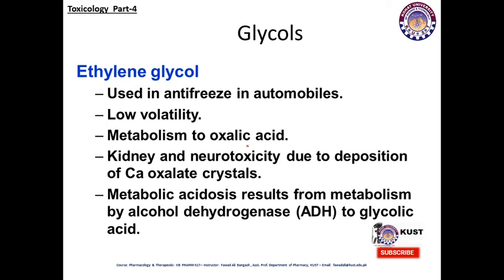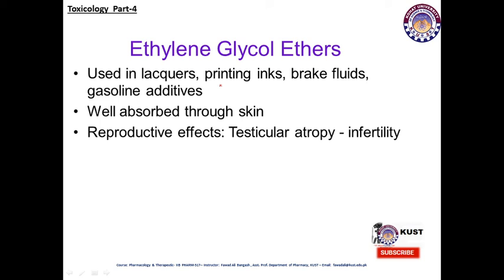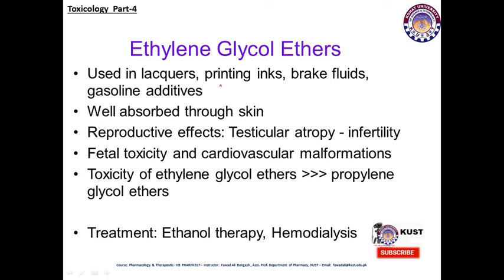Ethylene glycol, used as antifreeze in automobiles, has low volatility and is metabolized to oxalic acid, causing kidney and neurotoxicity due to deposition of calcium oxalate crystals. Metabolic acidosis results from metabolism by alcohol dehydrogenase to glycolic acid. Glycol ethers are used in liquid paints, lacquers, brake fluids, and gasoline additives; they are well absorbed through the skin and cause reproductive effects including testicular atrophy, infertility, fetal toxicity, and cardiovascular malformations. Toxicity involves ethylene glycol ethers and propylene glycol ethers. Treatment is semi-ethanol therapy or hemodialysis.